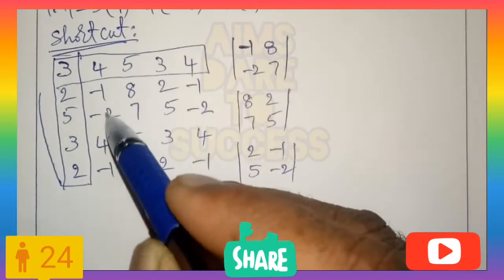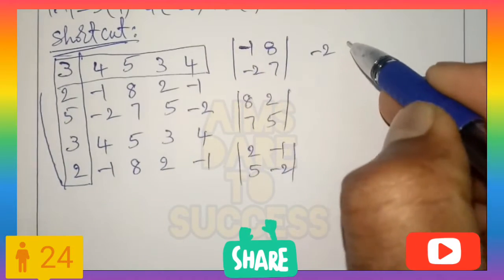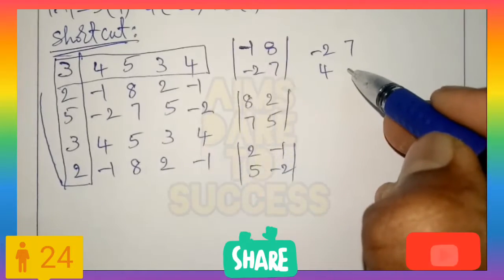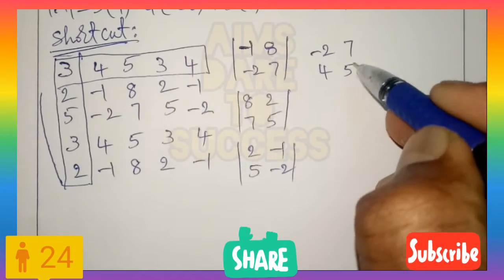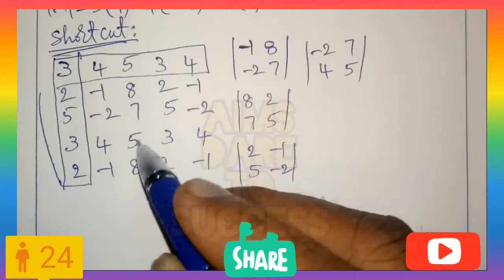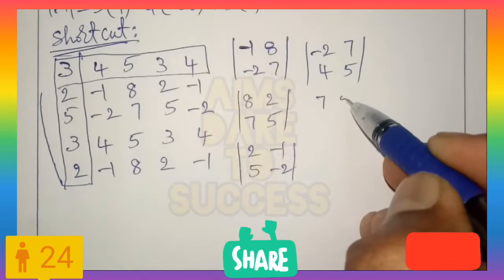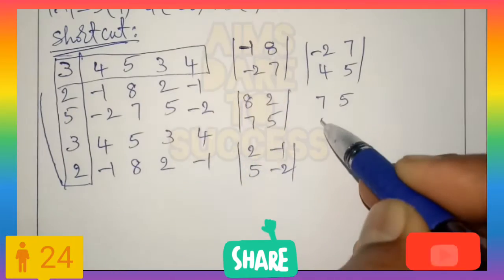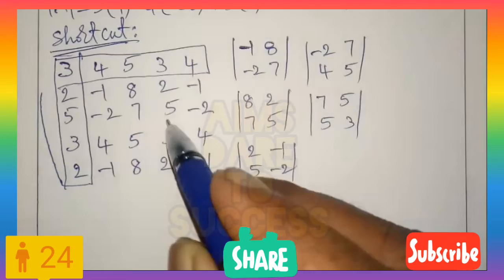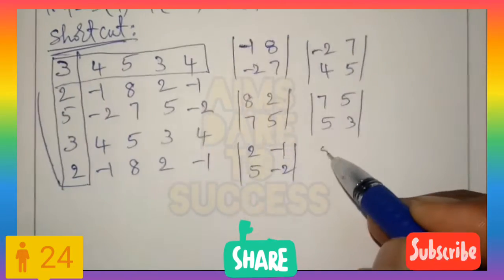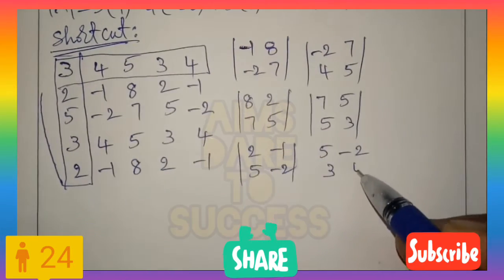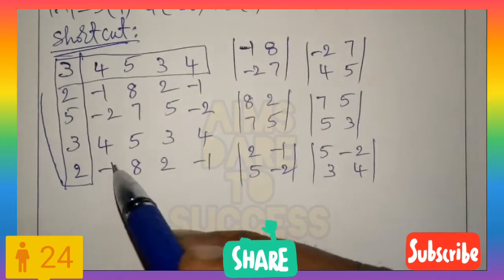Next, for row 2 and row 3: −2, 7 / 4, 5 — write in second column in the small data. Next: 7, 5 / 5, 3 — write in second column. Next: 5, −2 / 3, 4 — write in second column.